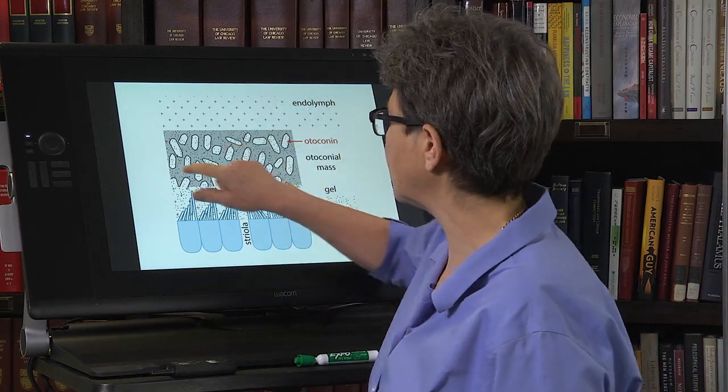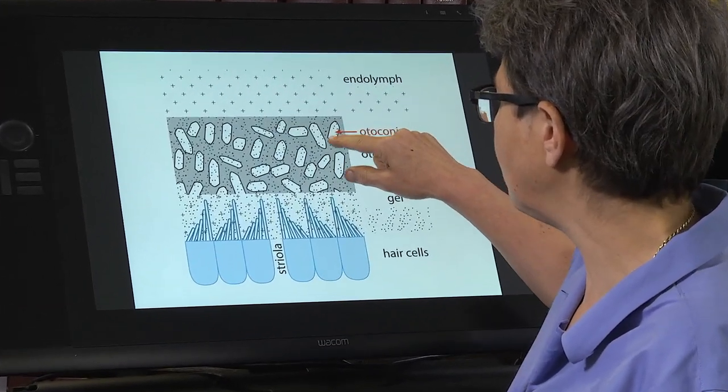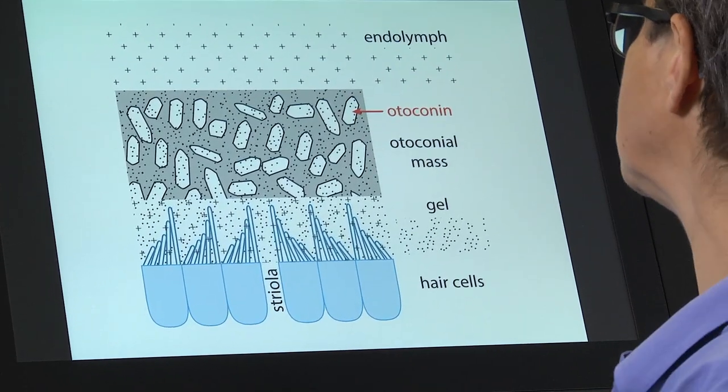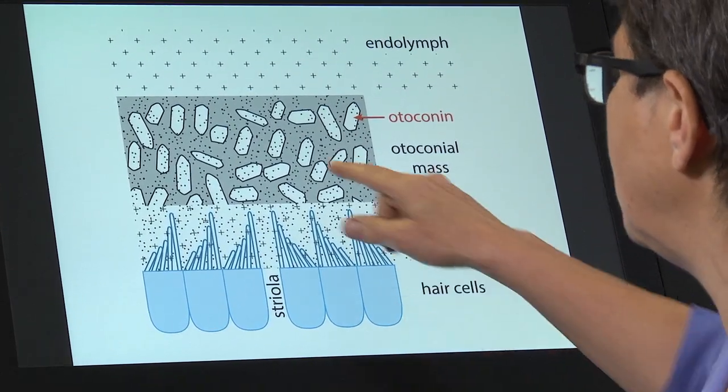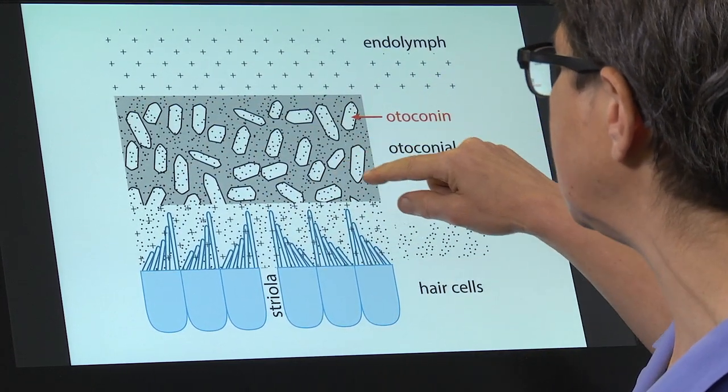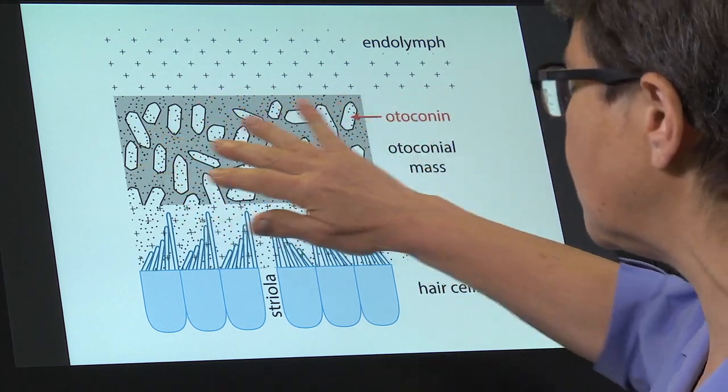And so there is an otoconial mass, which is made out of otoconia, which is a protein, with calcium carbonate all over. There's calcium carbonate in here, and this is all held together with a goo, a gel.